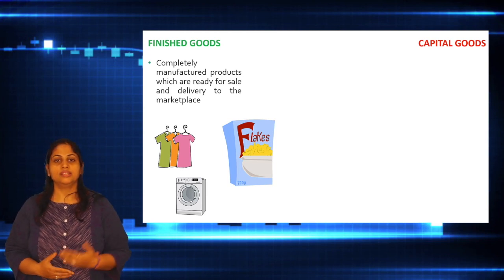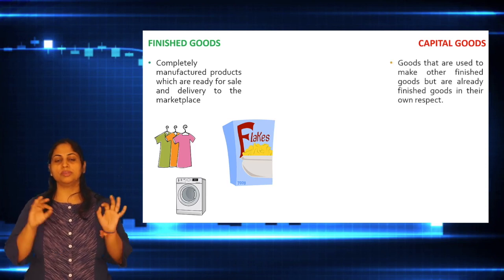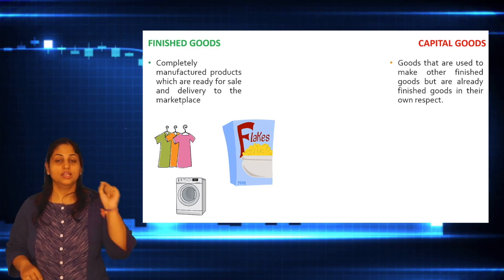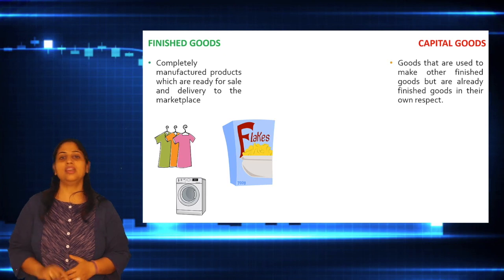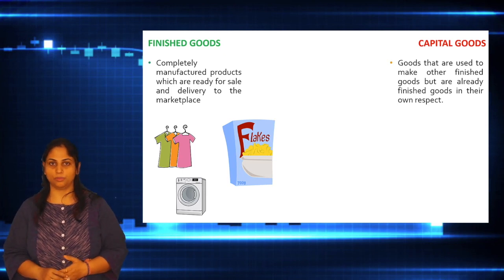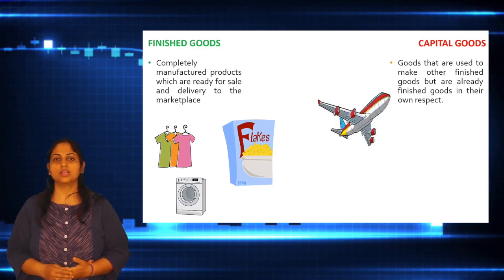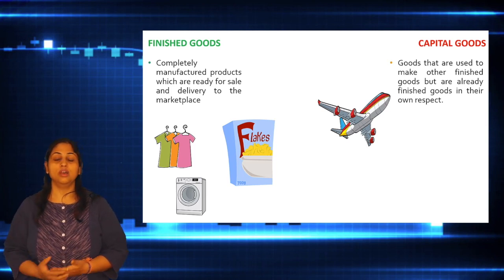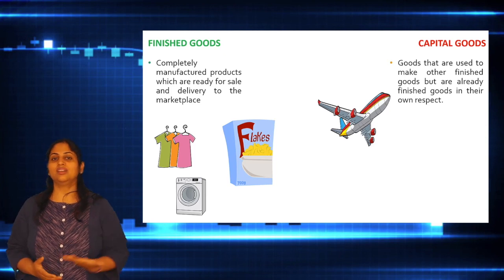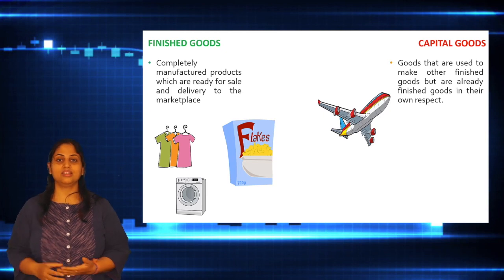The second category is capital goods. Capital goods are finished goods, and the difference between finished goods and capital goods is one key point: there is no value addition in capital goods either, but we will use them as an investment to generate more business and profit. For example, an airplane — we utilize it in the travel industry, cargo, or transport to generate profit. So it was my investment, my capital, and that is why it is in the capital goods category.